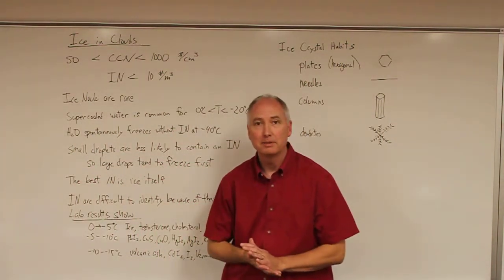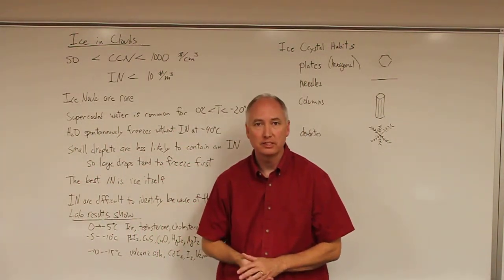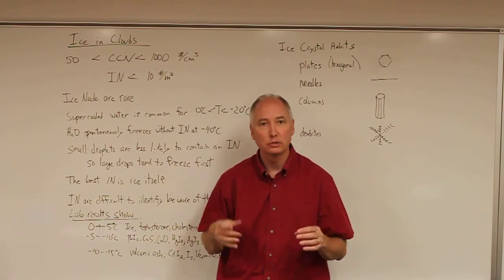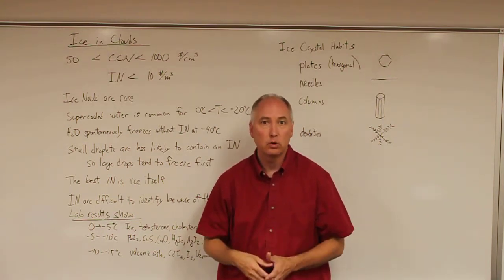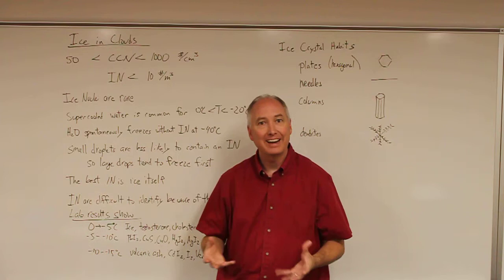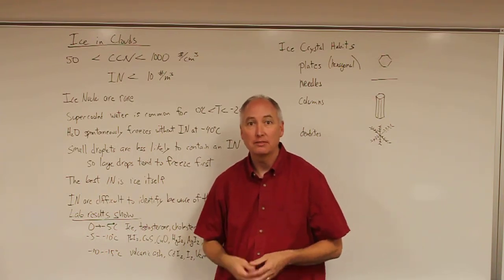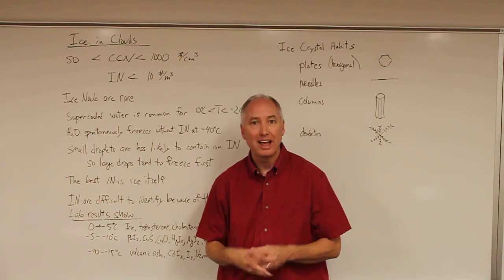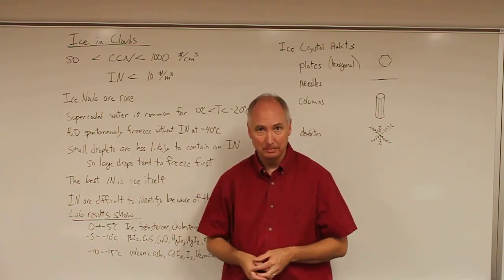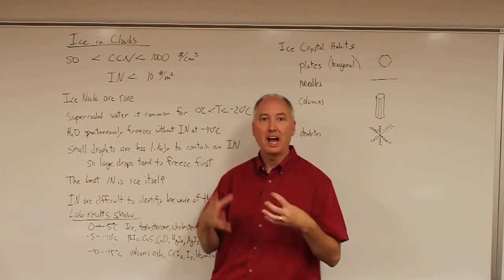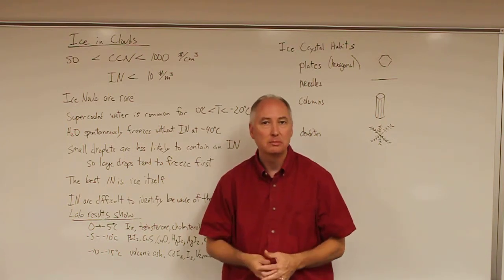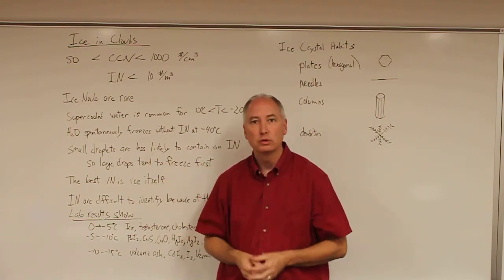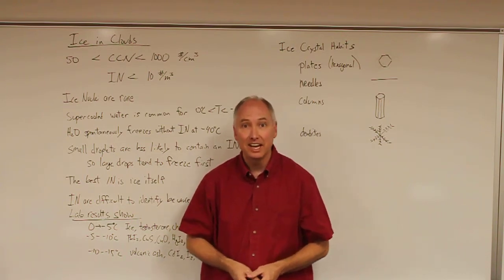So far, everything we've talked about with regard to cloud microphysics has been with respect to warm clouds—clouds that only contain liquid water. If we want to talk about actual clouds in the atmosphere, we have to start talking about ice, because most clouds are actually mixed phase, which means they have both liquid water and ice present. There's another subset of clouds which contain only ice, which we refer to as glaciated clouds.